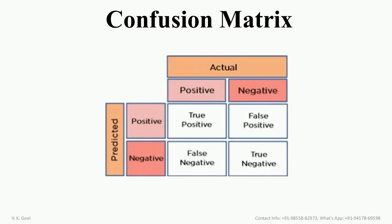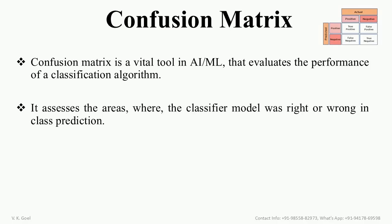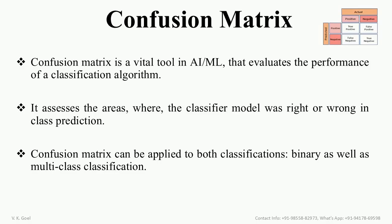A confusion matrix is a tabular form of results of a classification algorithm. It points out the areas of a classification model where it predicts correctly or not correctly. Therefore, a confusion matrix can be used to evaluate the performance of a classification algorithm. The areas where the model is correct or wrong in prediction can be located with the help of a confusion matrix. Further, evaluation using a confusion matrix can be applied to both binary as well as multi-class classification problems.